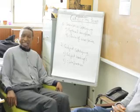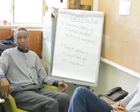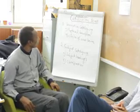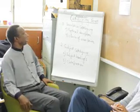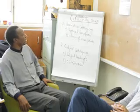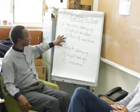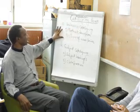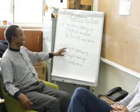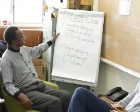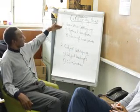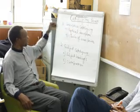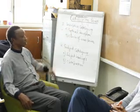Cataloging is a process of organizing library and information resources, and it has two major phases. These two major phases are descriptive cataloging and subject cataloging. In descriptive cataloging, we break it into two phases again: physical description and choice of access points.